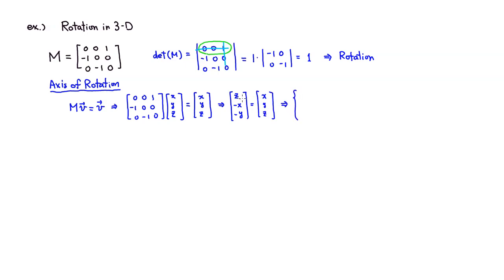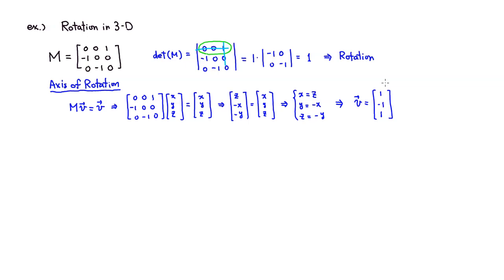So condition-wise, going backward: we want x to equal z, we want y to be the negative of x, and z to be the negative of y. Since there are infinitely many such vectors, I'll pick a nice one. x and z must be equal, so I'll give both the value 1. Then y must be the negative of x, so y = -1. This gives us the direction vector v = [1, -1, 1] for the axis of rotation.